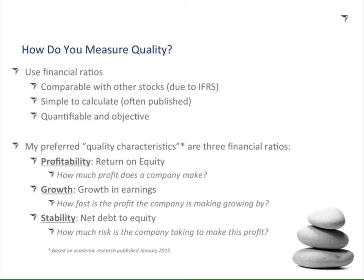Using the quality characteristics of profitability, growth, and stability and pegging them to financial ratios: for profitability, my preferred measure is return on equity — net profit divided by average shareholder equity. Think of it as the interest rate you get when you invest in the business. For growth, it's earnings growth — earnings this year divided by earnings last year. You can look at EPS, bottom line, or EBITDA, but it's simply how fast the profits in this company are growing.